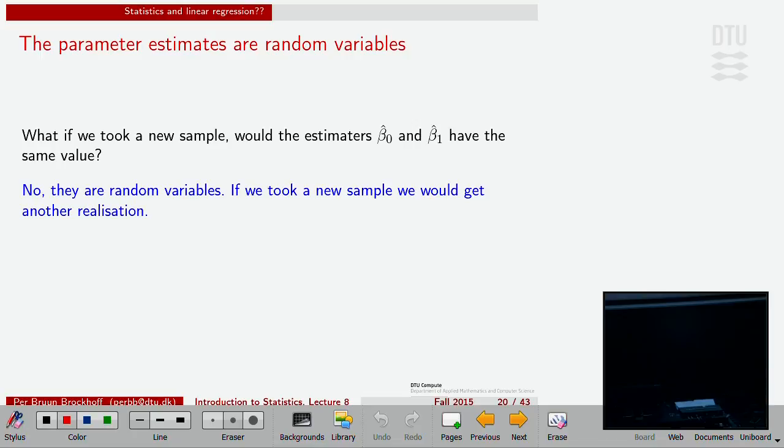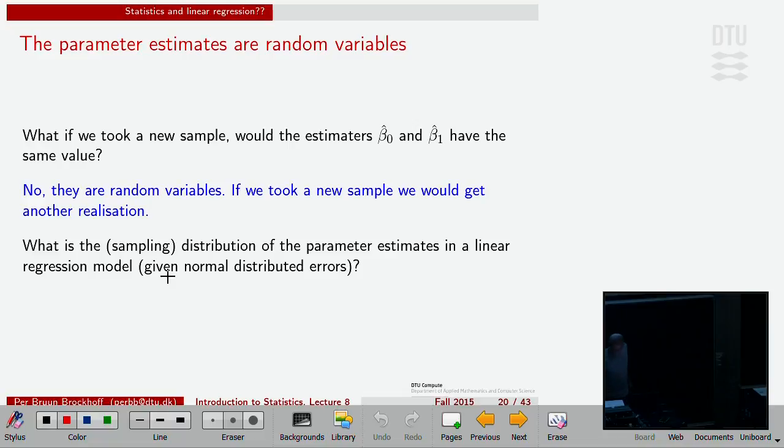This is what happened with means in the beginning of the course. I cannot just compute the line and claim that 1.11 is the true relation between weight and height based on my 10 data points. It will be uncertain. I need to deal with that.